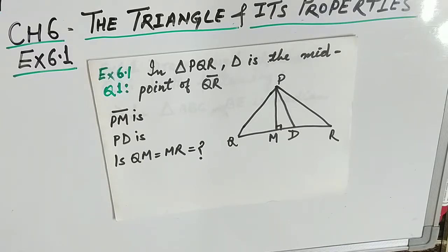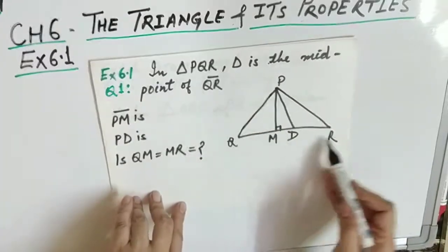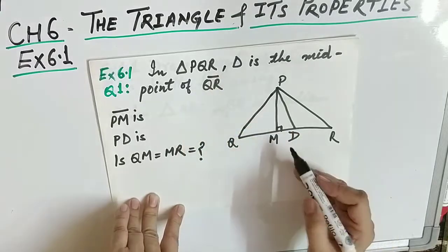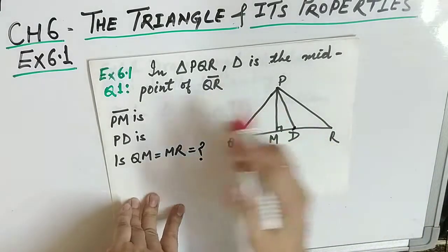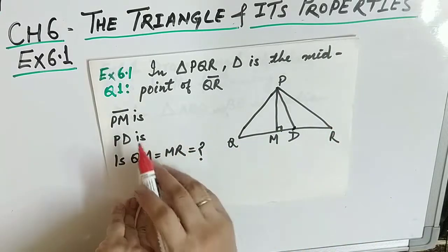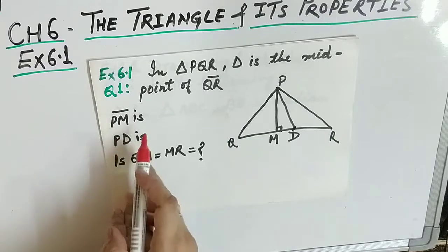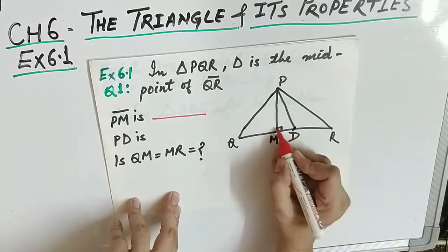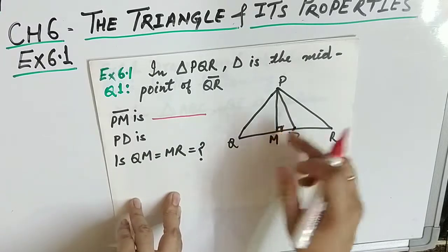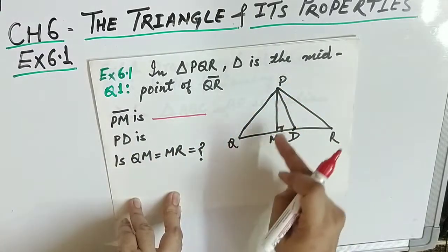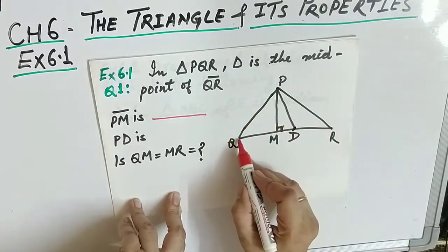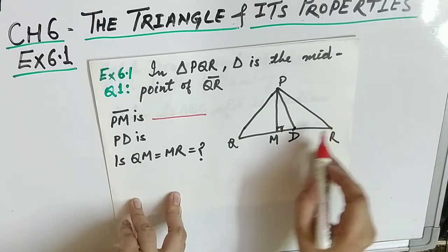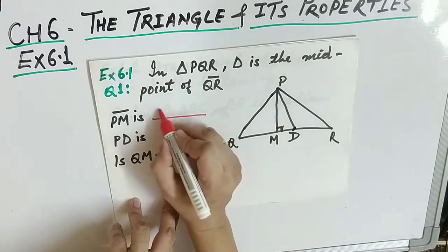Let us begin with Exercise 6.1, which says: in triangle PQR, D is the midpoint of line segment QR. So there is a triangle PQR where point D is the midpoint of QR. The question asks: what is PM? PM is the perpendicular drawn from vertex P to the opposite side QR, and the angle is 90 degrees. So PM is the altitude.